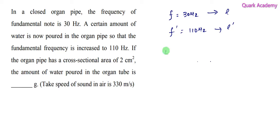Fundamental frequency of closed organ pipe is given by V by 4L, where V is the velocity of sound and L is length of the pipe. So from this, I can write length which is V by 4F. In our case, L equals V, V is 330 meter per second, 4 into F, F is 30, so you will get 11 by 4 meter.